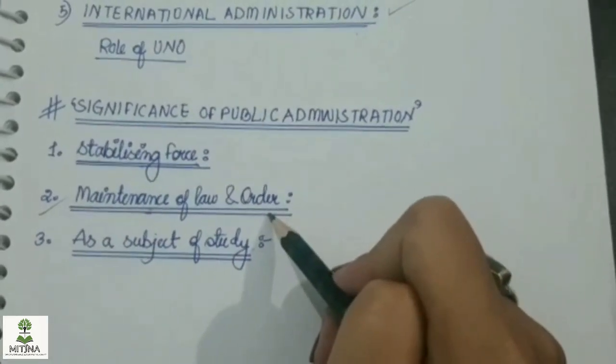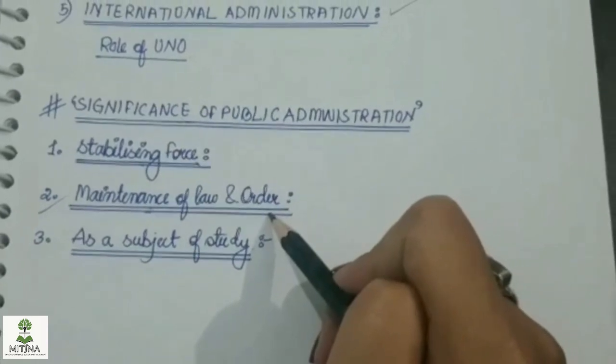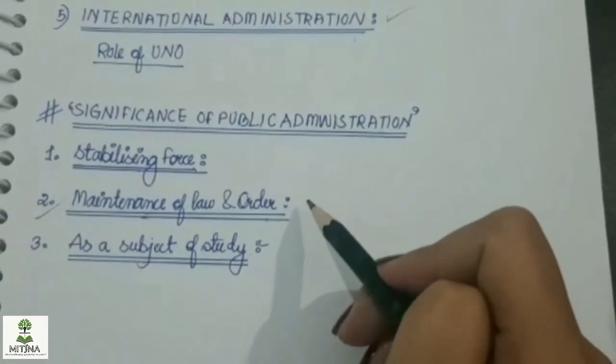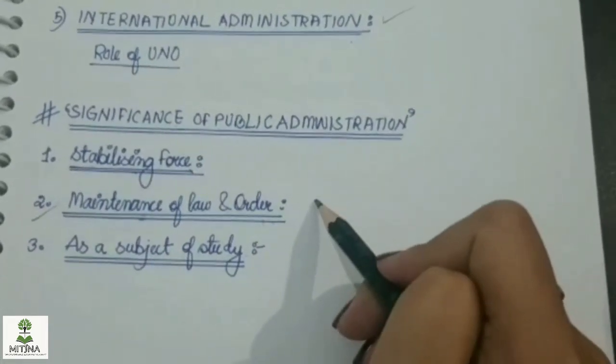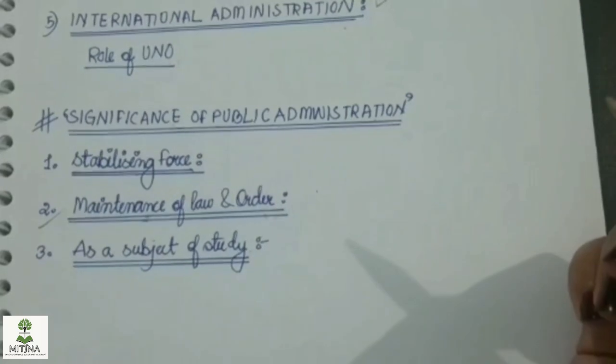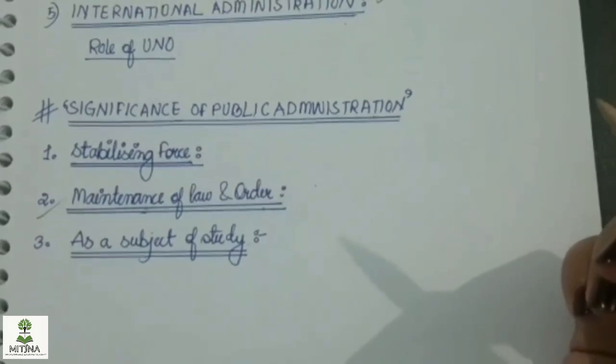The role of the United Nations involves protecting people and supporting international peace and order.